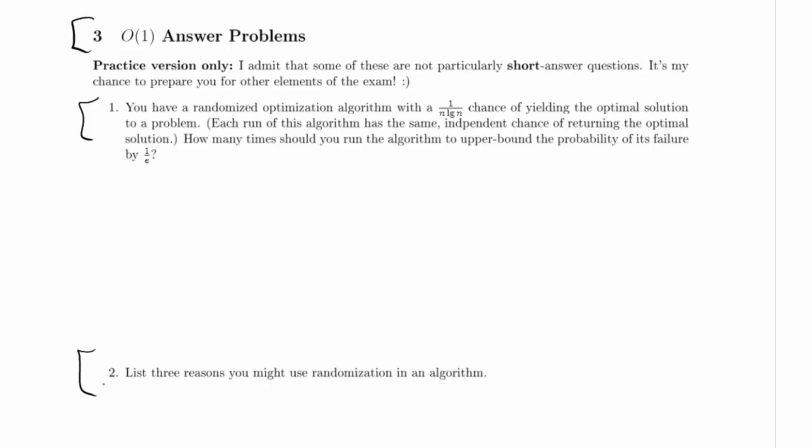Each time we run this algorithm we have a 1 in n log n chance of succeeding, of getting the optimal solution, and we want to know how many times we have to run it to get this bound on its failure. So what's the probability that it fails on a given run? That's 1 minus the probability it succeeds, 1 minus 1 over n log n. This is the probability that it fails in one run.